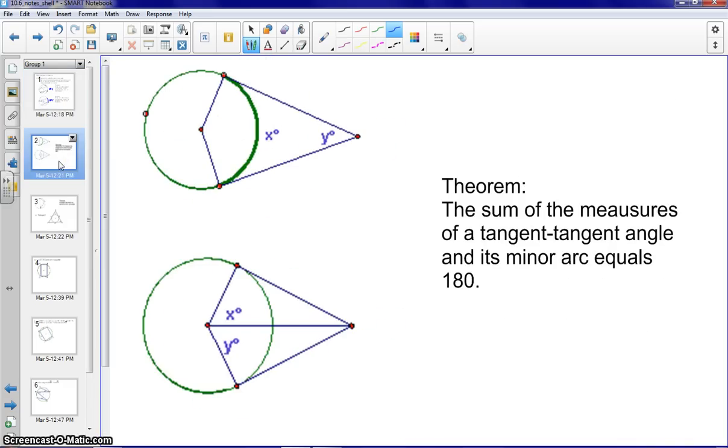Next one deals with ice cream cone. The theorem states the sum of the measures of a tangent-tangent angle and its minor arc equals 180. Again, we've discovered this in class. So we know the minor arc and the tangent-tangent angle would be supplementary. So X plus Y would equal 180.